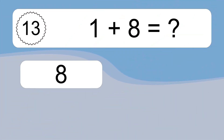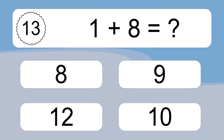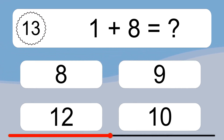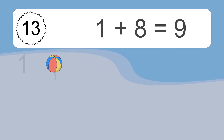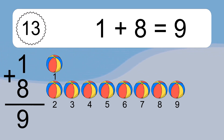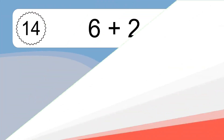1 plus 8 equals what? 1 plus 8 equals 9. Let's count it. 1, 2, 3, 4, 5, 6, 7, 8, 9.